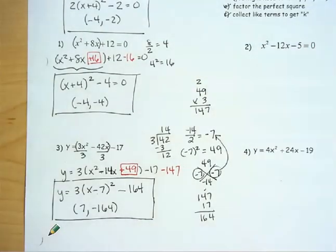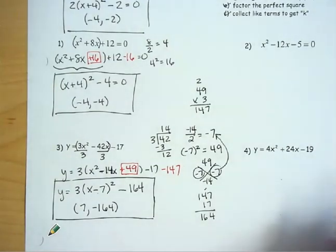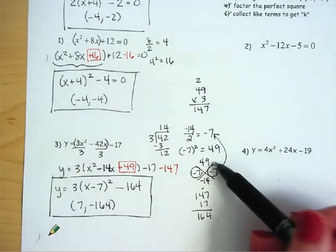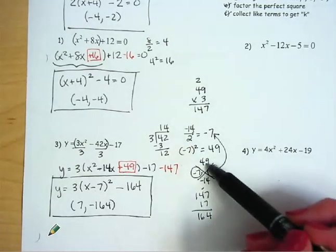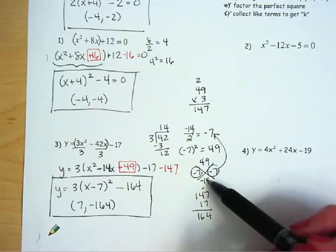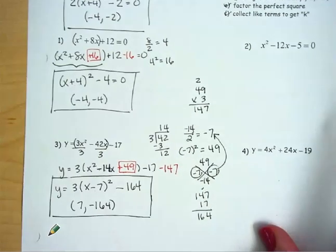So pause the video and try number 4 by yourself. And you don't have to do that shortcut by the way. If it just feels like one more thing to remember, just do your cross: what multiplies to the last term and adds to the middle. And you'll be fine. So pause the video and try number 4.